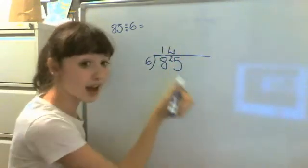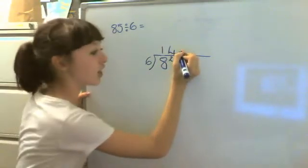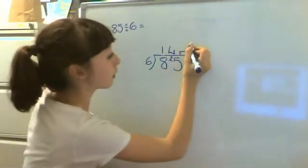But because there's no other numbers there, we need to remainder it. So that's what I call it anyway. So we put the r there, little r, and then we put the 1 there.